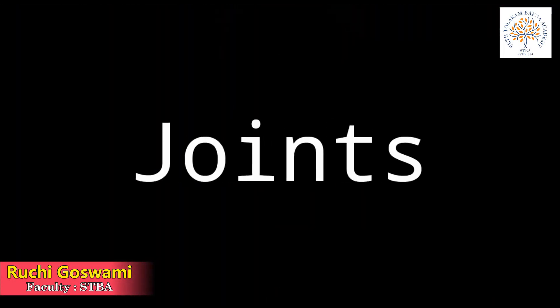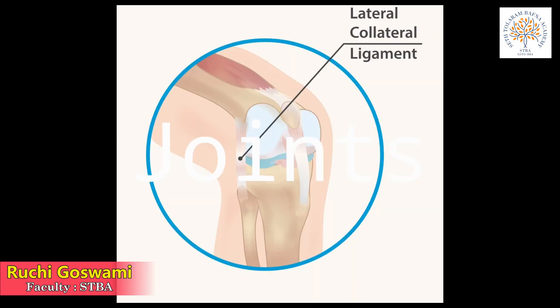Now let's look at the importance of joints. Bones can be movable or immovable. The bones of the skull have immovable joints in order to protect the brain. There are tissues called ligaments, and these ligaments join the bones at movable joints. Movable joints can be of different types.